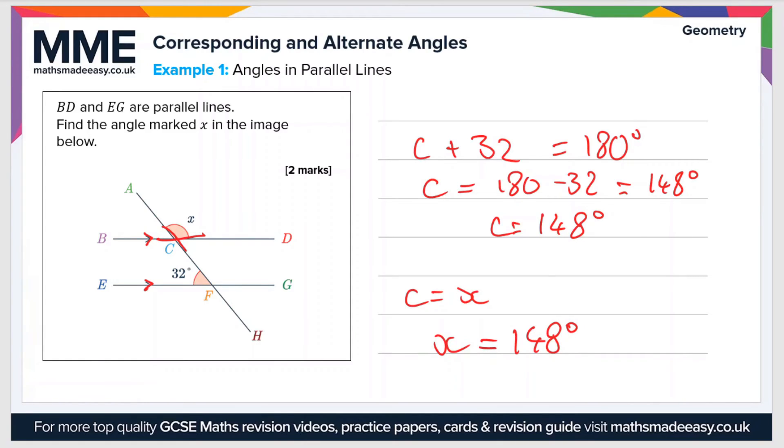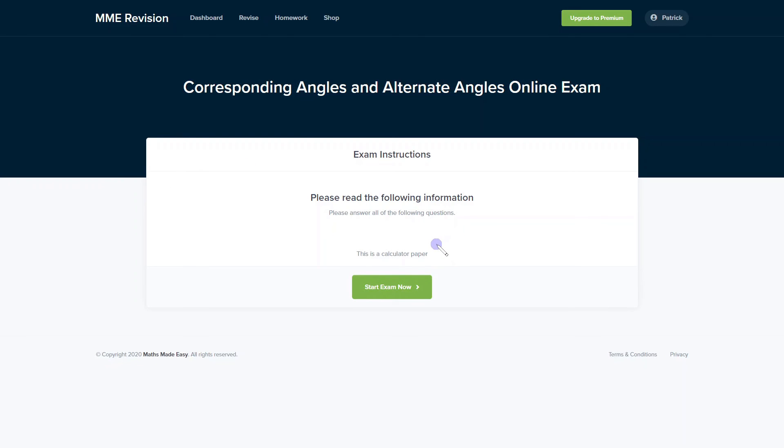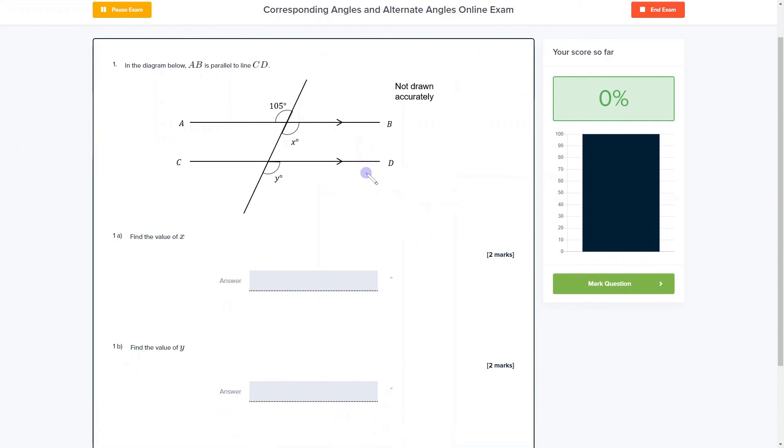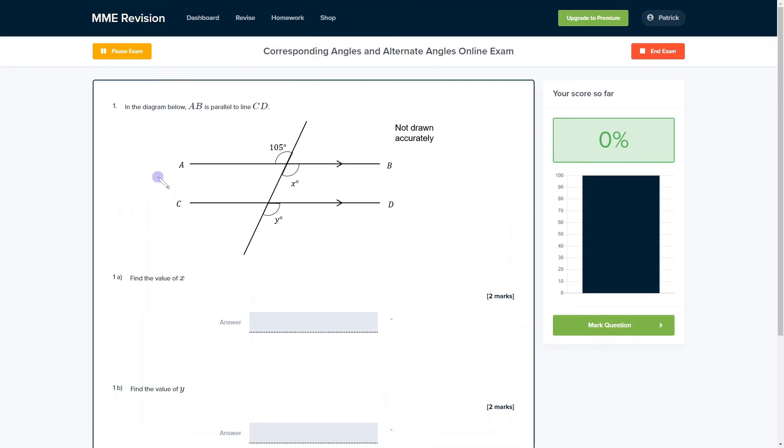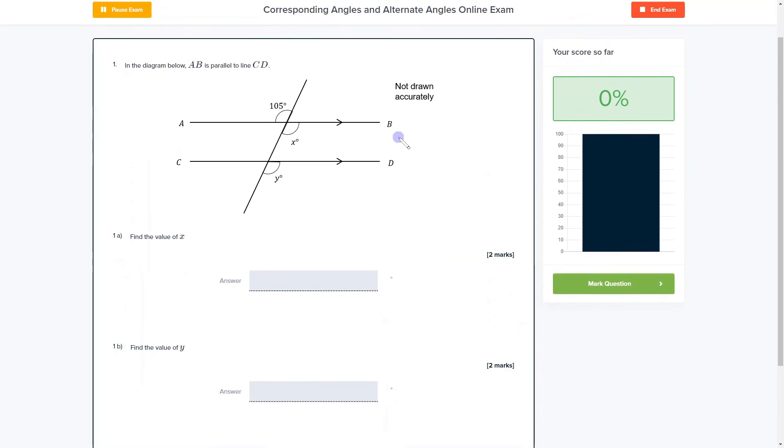This is just one way of doing this question. You could use any of the rules and you should end up with the same answer. If you found the video useful, why not practice the corresponding and alternate angles online exam. It's available through our revision platform. You'll find plenty of questions to practice with instant feedback on each one. If you're interested, click the link below.